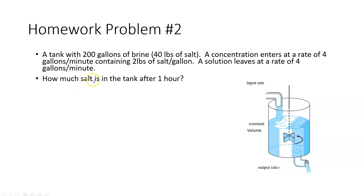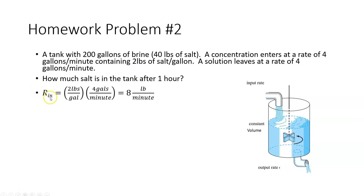The question is: how much salt is in the tank after one hour? We want to see how much this is going to change. What we have going in — the concentration rate going in — you've got two pounds for every gallon of salt going in, and it's going in at a rate of four gallons per minute. The gallons cancel, and you've got eight pounds per minute. So that's the rate of the salt going in.